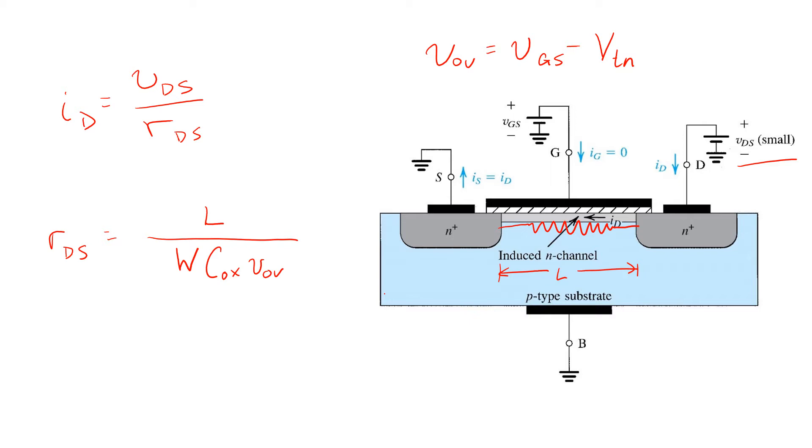Finally, since charge carrier transport occurs via drift due to the electric field arising from the applied VDS, the resistance is inversely proportional to the channel's majority carrier mobility, mu n. Thus, we have this expression for the channel resistance.